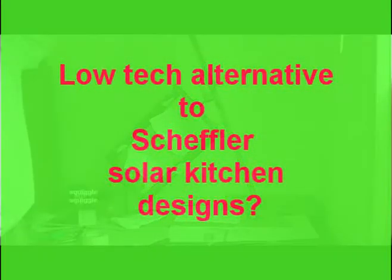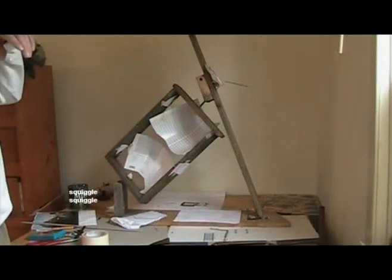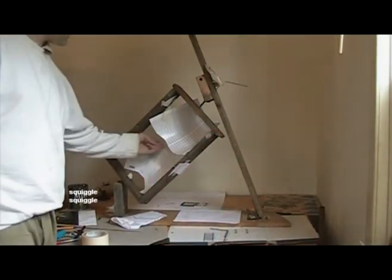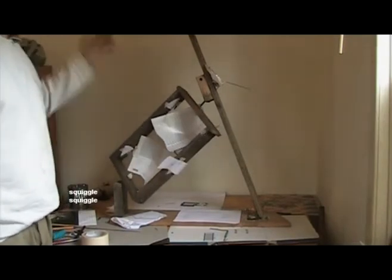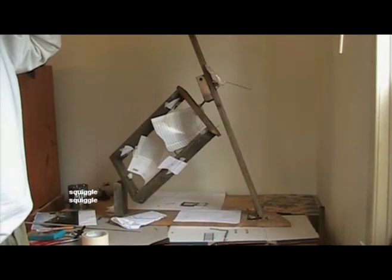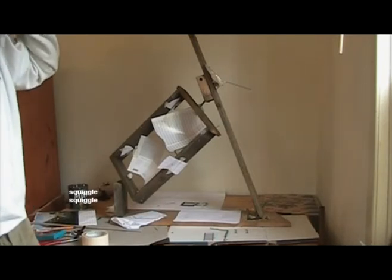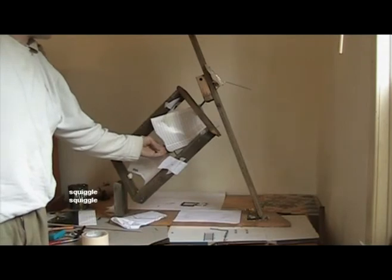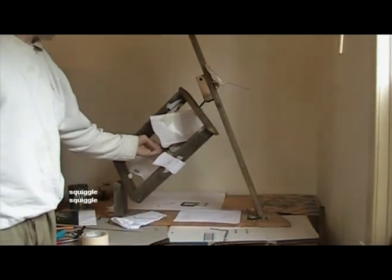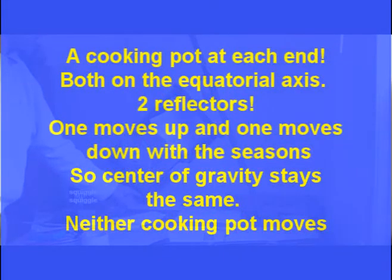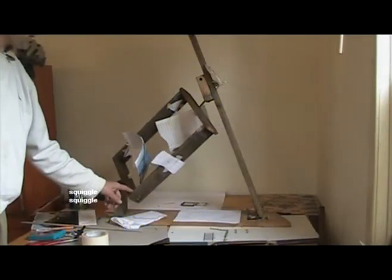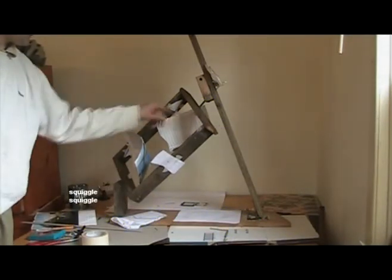There is a thing called Scheffler Solar Kitchens — he's a guy from Germany or Austria who's done a wonderful job thinking through solar, but it's a high-tech engineering solution. This is maybe a lower-tech alternative that ordinary people might be capable of doing. You set it up in the morning to line up with the sun — 15 degrees per hour all day — and the sun keeps shining on your cooking pots.